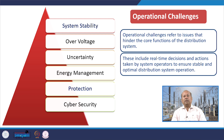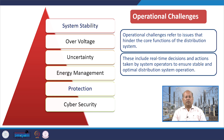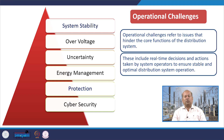When we talk about operational challenges due to DER integrated distribution networks, we may face challenges associated with system stability, over voltage, uncertainty, energy management, protection and cyber security. Operational challenges refers to issues that hinder the core functions of the distribution system, including real-time decisions and actions taken by system operators to ensure stable and optimal distribution system operation.